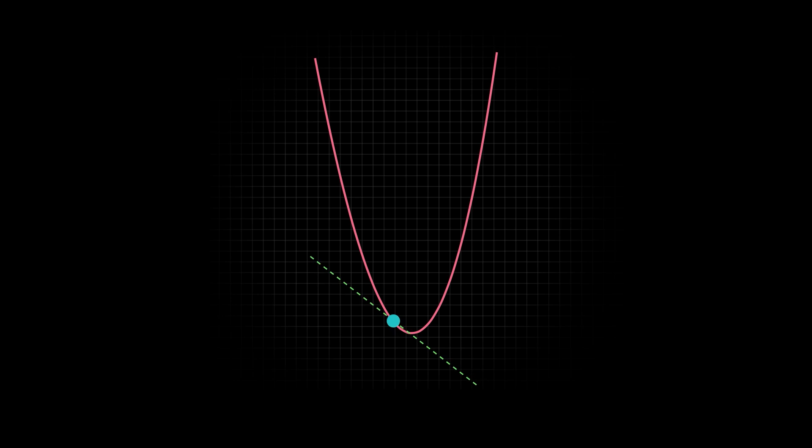So if the function can't be decreasing at the minimum, or else we could keep going to get a lower value, and it can't be increasing, or we could backtrack to get a lower value. Then the only option left is to be neither increasing nor decreasing. Which means it has to be neither positive nor negative slope. But that means the slope must be zero.